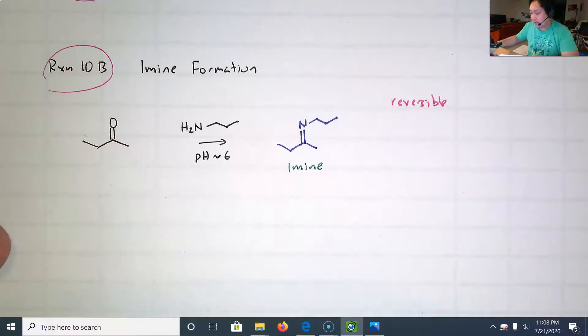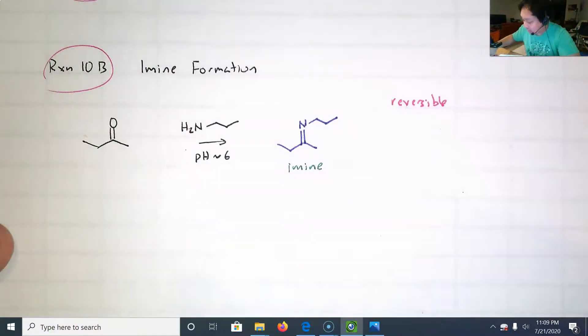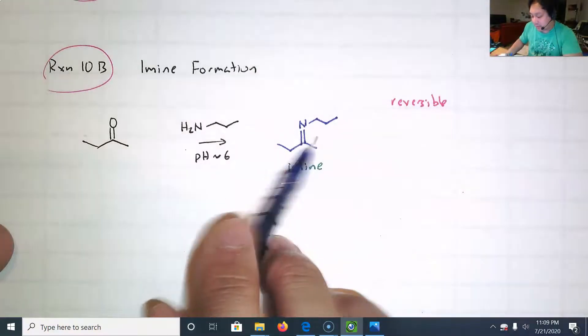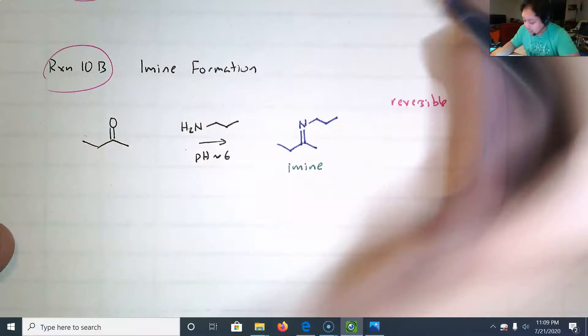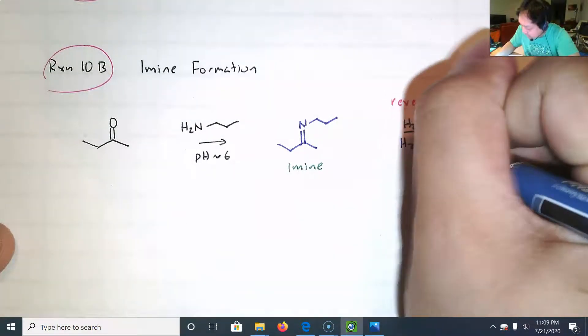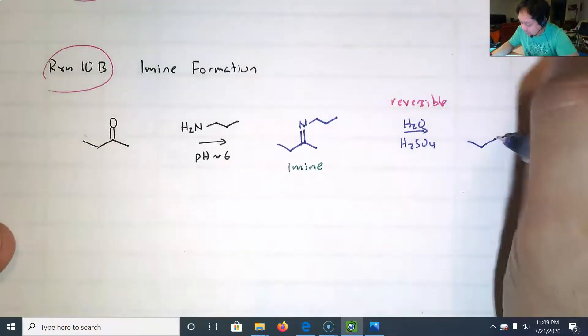This reaction is reversible, and it's reversible by doing hydrolysis. When you do hydrolysis, you're cutting with water. We're just going to cut this piece off and get back the starting material. So if you have water and acid, H2SO4, sometimes you can add heat, but all you're doing is going back to the starting material.